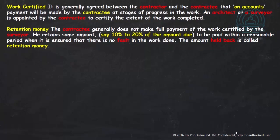Work certified means the work certified by the architect of the contractee. When a contractor completes a certain percentage of work, he shows that work to the contractee. The architect of the contractee then certifies the completed portion — this certified portion is known as work certified.